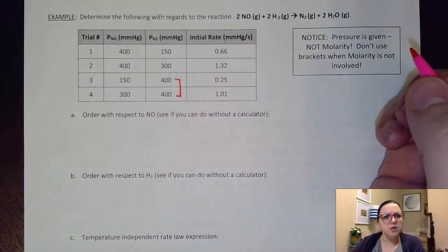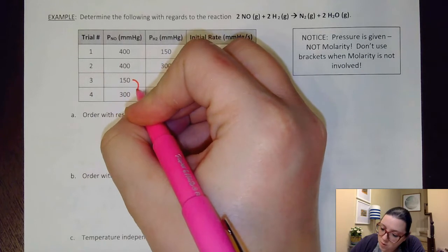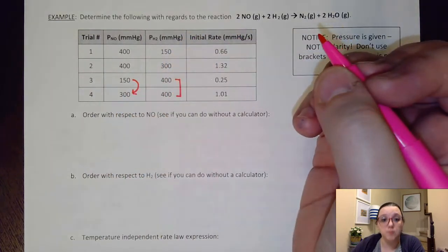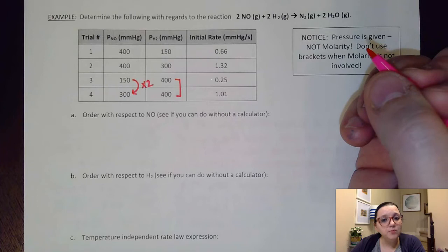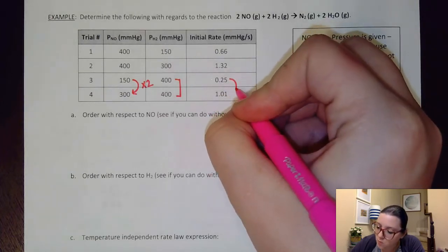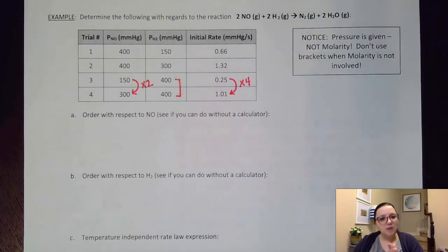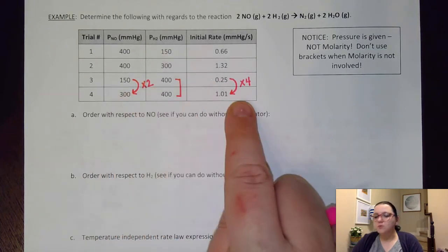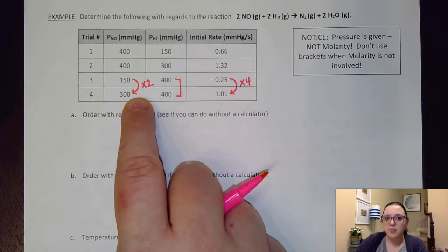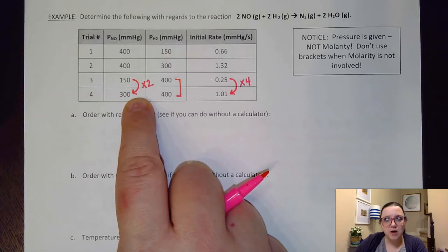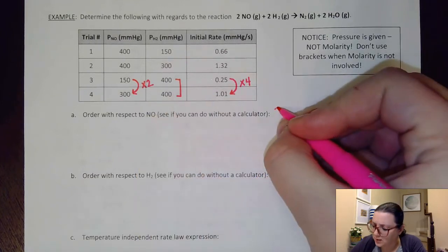So let's kind of see what the numbers are doing for the pressures and the rates on those two trials. To go from 150 to 300, to change that pressure, that would be multiplying by two. I've doubled my pressure there. And when I've doubled my pressure, I notice here on the rates that those have basically quadrupled. So now think about that. If I double this pressure here, and that results in a quadrupling of the rate, what must be the exponent on that particular pressure? Well, if you think about it, two squared is four. And so that means I'm going to guess that NO is probably second order.